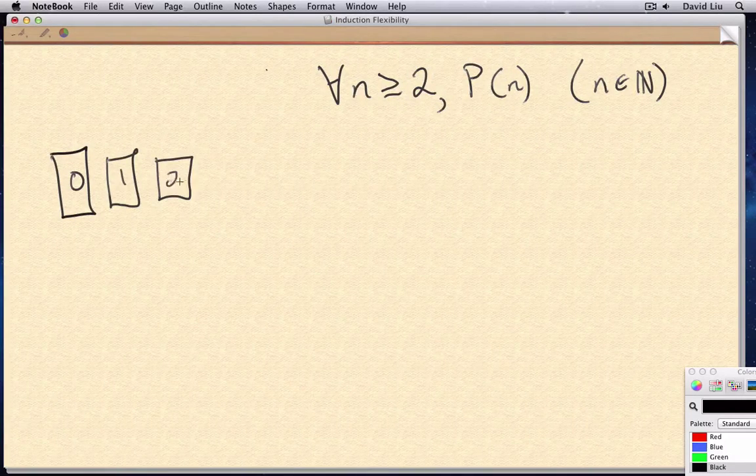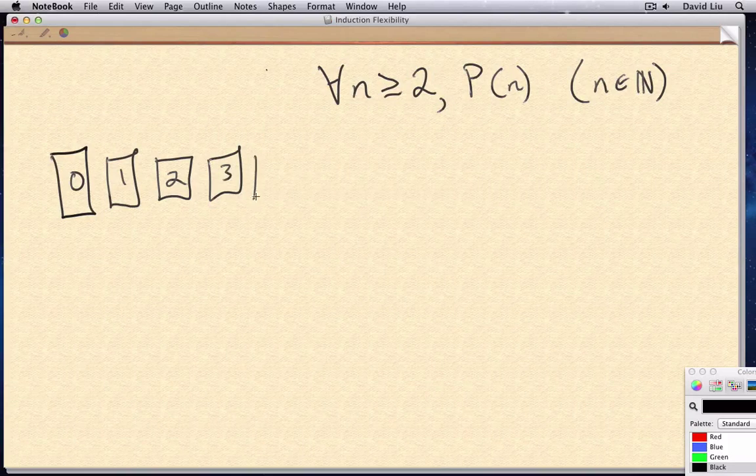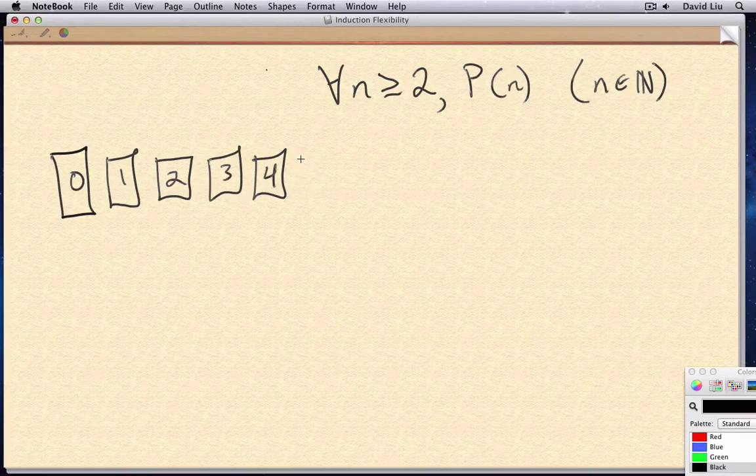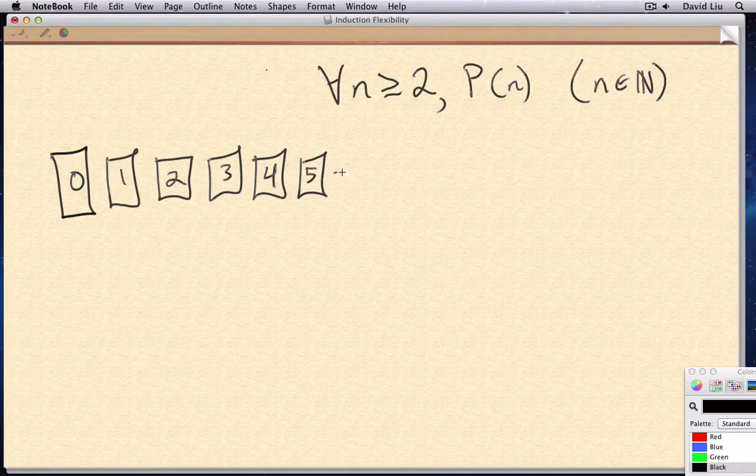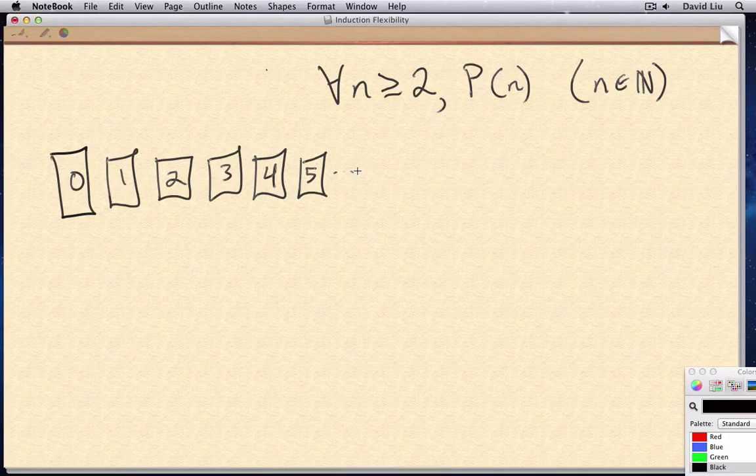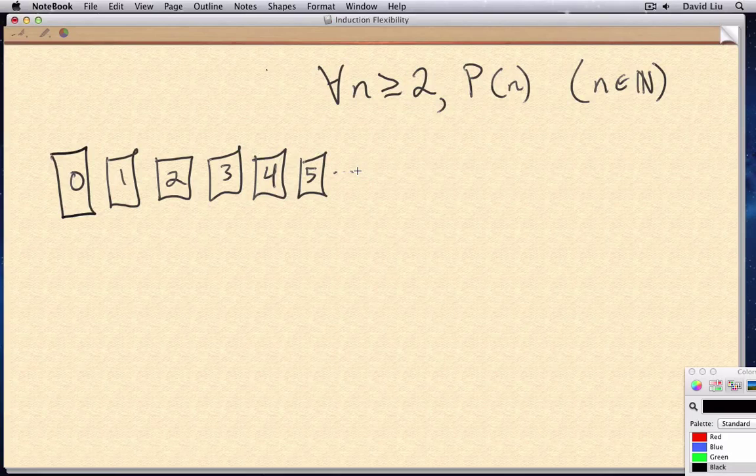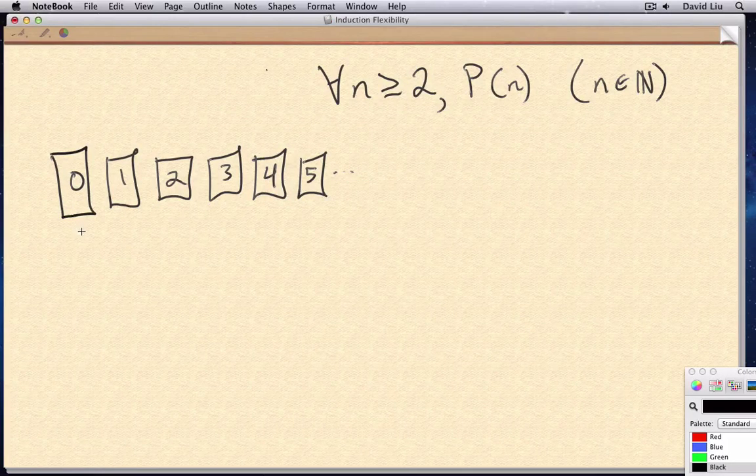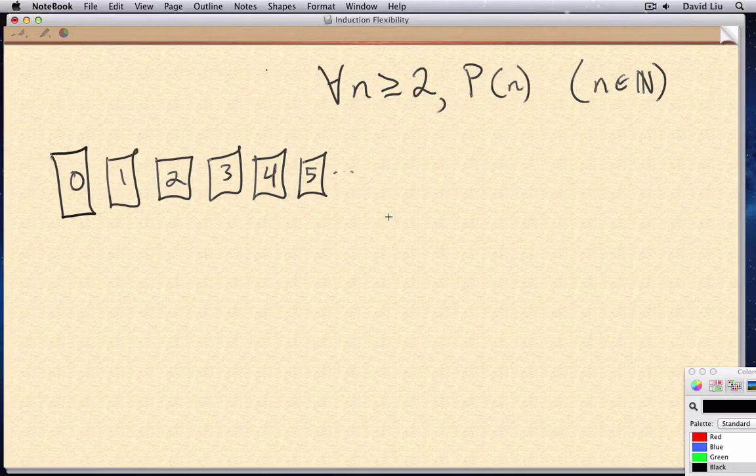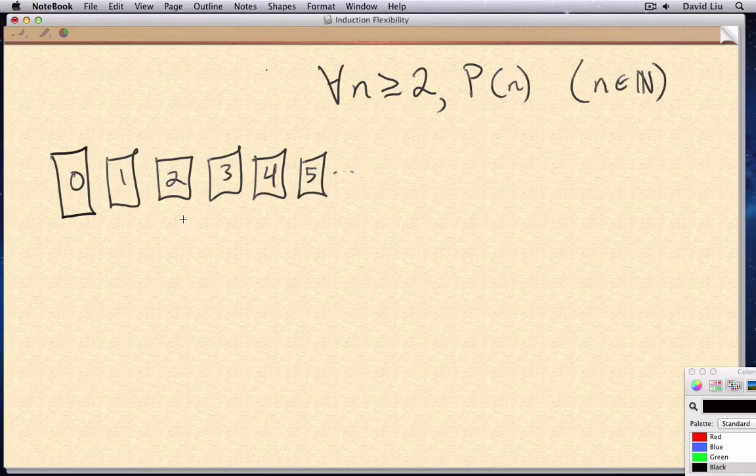We can still use induction to prove what we'd like. Because if we recall our domino metaphor, only one thing really needs to change. We don't want all of the dominoes to fall down now. All we want are the dominoes from two onwards to fall.